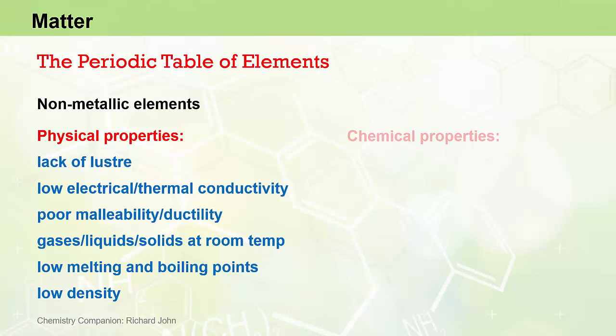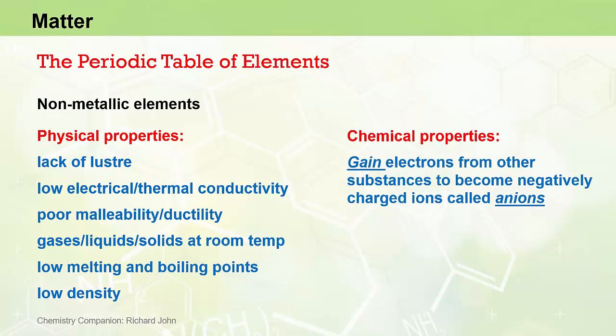The most important chemical properties of non-metals is that they tend to gain electrons from other substances in chemical reactions to become negatively charged ions called anions. And again, that's exactly the opposite to what happens with metals.